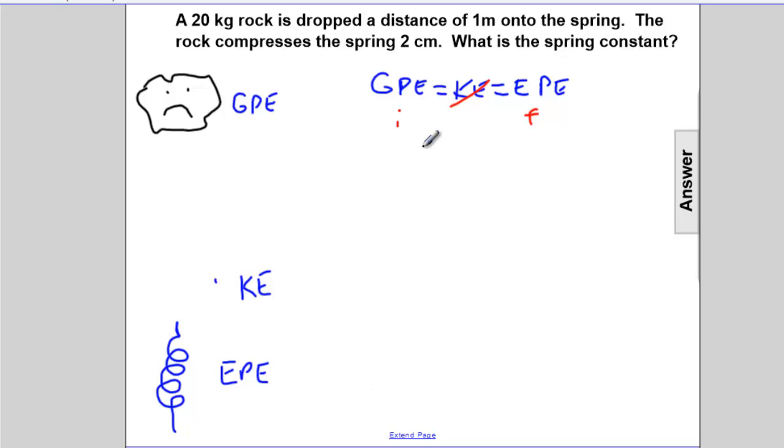So now we'll write the formulas. The formula for GPE is M G delta H. And that's equivalent to one-half K x squared. So the question is, what is the spring constant?